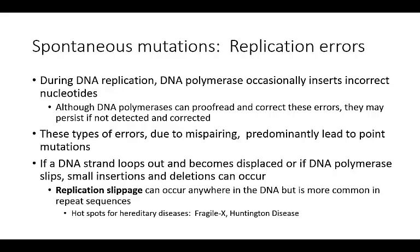If a DNA strand loops out or becomes displaced, or if DNA polymerase slips, small insertions and small deletions can occur. This replication slippage can occur anywhere in the DNA, but it is more common in repeat sequences, because the polymerase can lose track of where it's at if there's a long sequence of, say, ATG, ATG, ATG. These are typically going to be hot spots for hereditary diseases, things like Fragile X and Huntington disease.